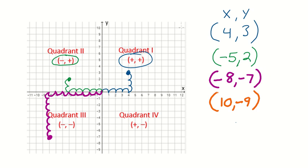So we start at the origin and we go over 1, 2, 3, 4, 5, 6, 7, 8, 9, 10. And now I got to go down 9. 1, 2, 3, 4, 5, 6, 7, 8, 9.